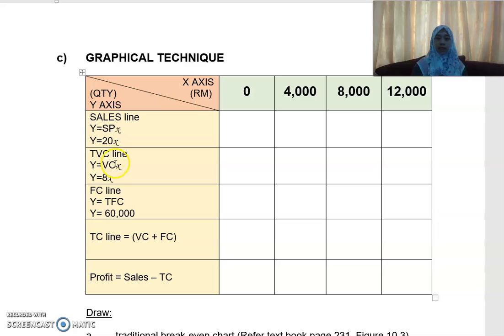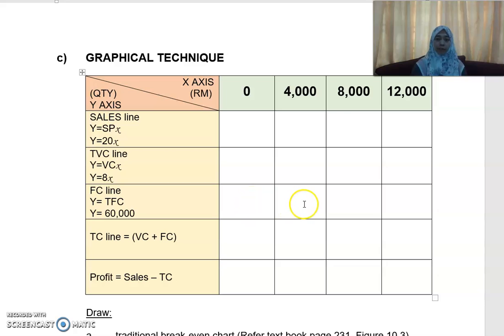Your total variable cost line: if your variable cost is 8 ringgit per unit, and you don't sell anything, that means 8 times 0. If you sell 4,000 units, it is 4,000 times 8, and you put that figure here. Next, fill in your fixed cost line — how much is your fixed cost if you don't produce anything, and how much if you produce 4,000 units? Then your total cost line: total cost means variable cost plus fixed cost. Adding variable cost and fixed cost gives you your total cost.